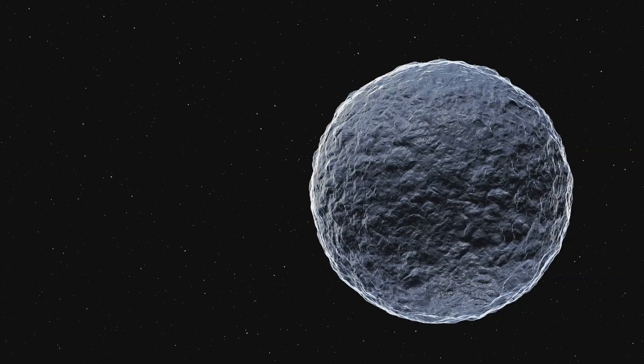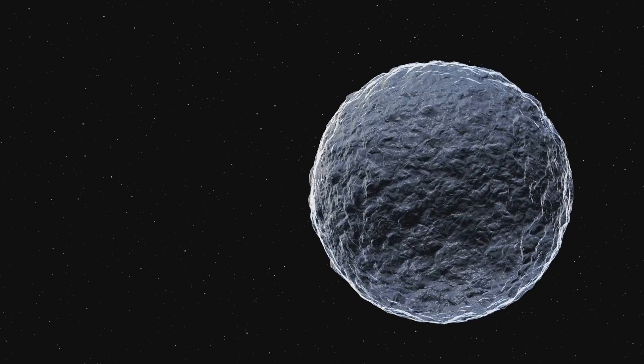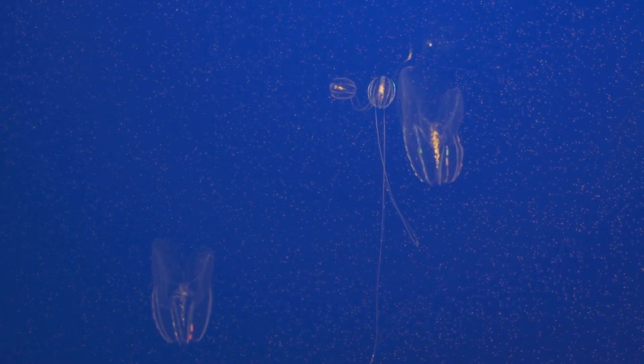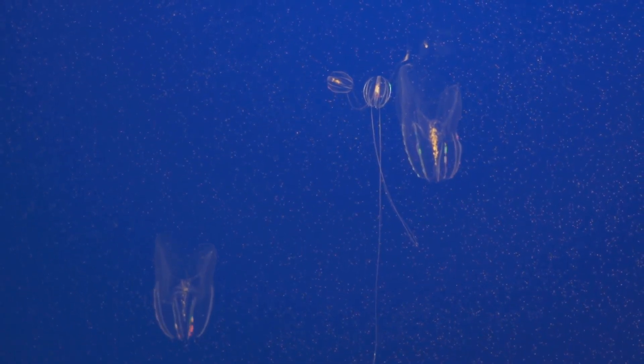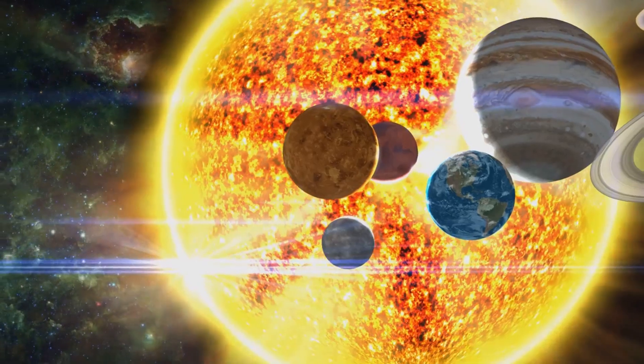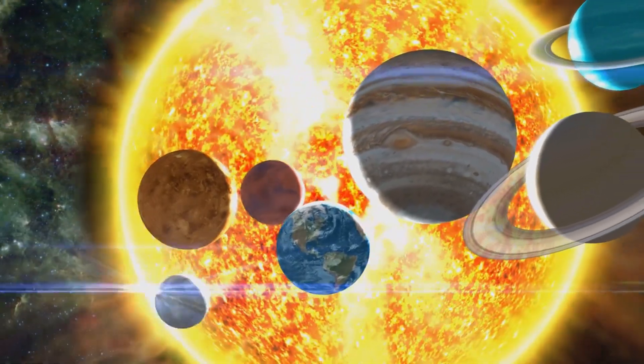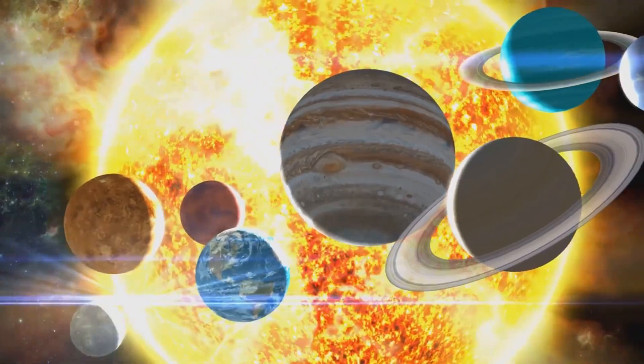This internal heat could be enough to sustain liquid water beneath their surfaces, potentially harboring life as we've never known it. Picture vast subterranean oceans teeming with bioluminescent creatures, their world illuminated by the faint glow of geothermal vents. The existence of rogue planets reminds us that our solar system, with its neatly orbiting planets, isn't the only model for planetary systems.